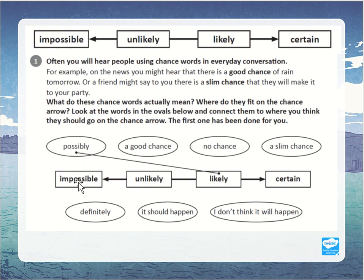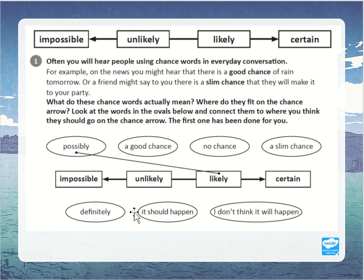So we've got impossible, unlikely, likely, and certain on the arrow. Where do you think 'a good chance' goes? What about 'no chance'? And 'a slim chance'? What about 'I don't think it will happen,' 'it should happen,' and 'definitely'? See if you can connect these to the correct words. You can pause the video to do that.